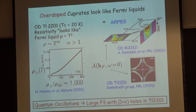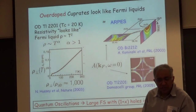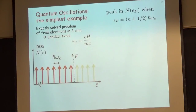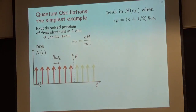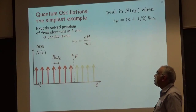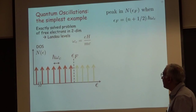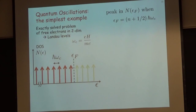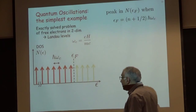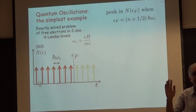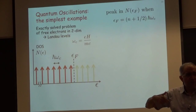Let me remind those of you who don't know what quantum oscillations are. Let's take the simplest example where you can work out everything explicitly: free electrons in two dimensions. We all know that gives rise to a density of states with Landau levels — huge spikes in the density of states separated by ħω_c. ω_c is the cyclotron frequency set by the magnetic field. Let's imagine parking our Fermi energy at some fixed number of particles and imagine changing the magnetic field. As you change the magnetic field, ω_c changes. Landau levels pop through the Fermi energy as you tune the field, and they go by — boom, boom, boom. You can count them.